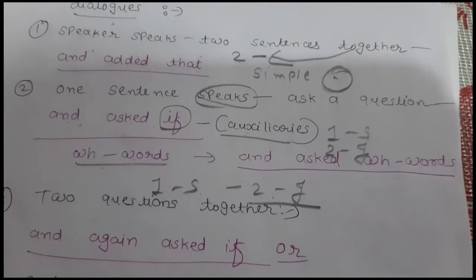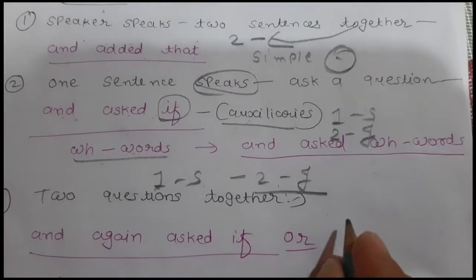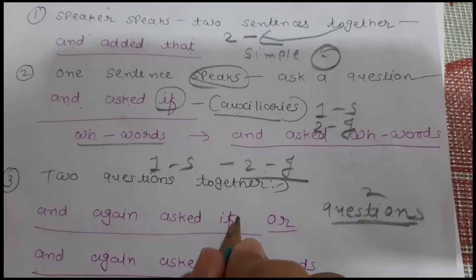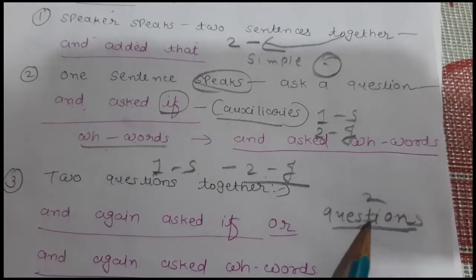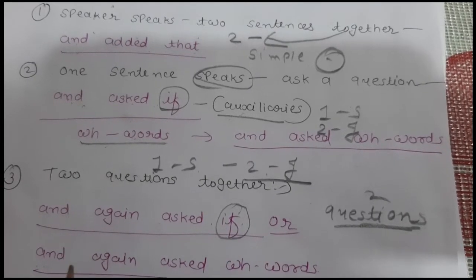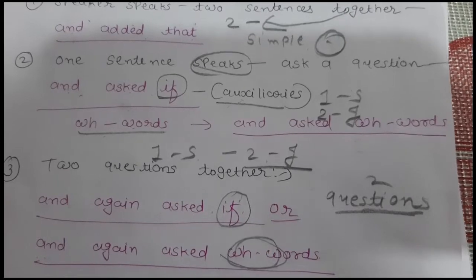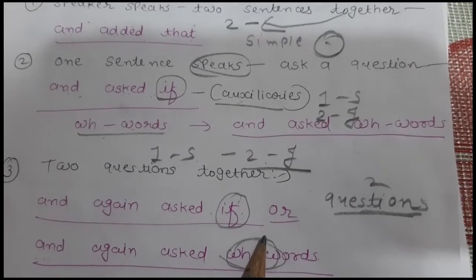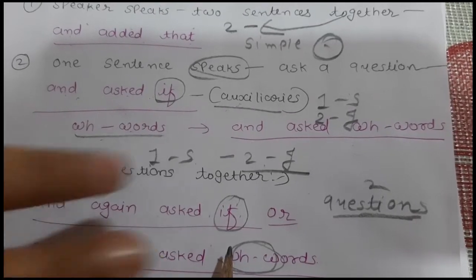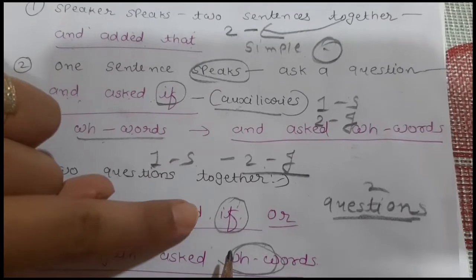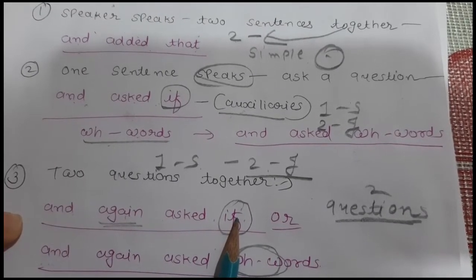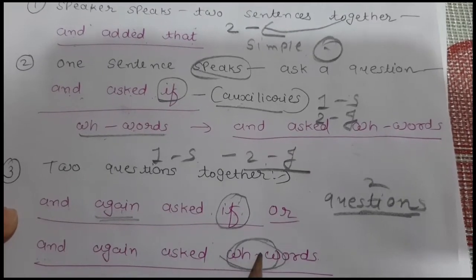Third rule: if two sentences are both questions — both interrogative — write the first according to the rule and to join the second, write 'and again asked if' for auxiliary questions, or 'and again asked' plus the wh-word for wh-questions. So: first rule — both simple; second rule — one simple, one interrogative; third rule — both interrogative.